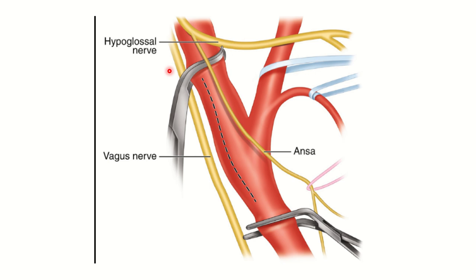In the upper part, we can see the hypoglossal nerve, which may be damaged during the clamping or the operation. We can also see the vagus nerve, which is just lateral and behind the internal carotid artery — it may also be damaged. Another nerve closely related to the carotid system is the ansa cervicalis, so any of these nerves may be damaged during the procedure.